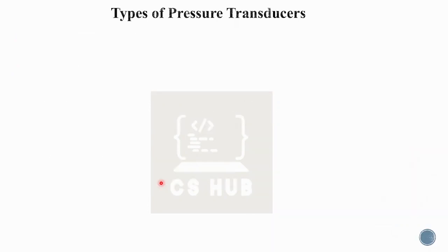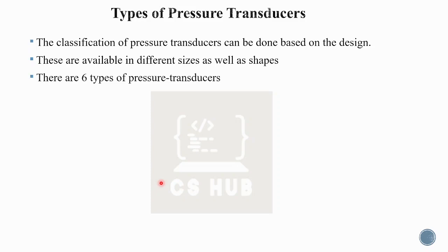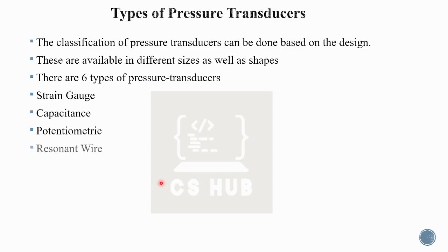Now let's look at the types of pressure transducers — the classification. They are based on different sizes and shapes. There are mainly six types of pressure transducers: Strain Gauge, Capacitance, Potentiometric, Resonant Wire, Inductive, and Piezoelectric. These are all the categories of pressure transducer.